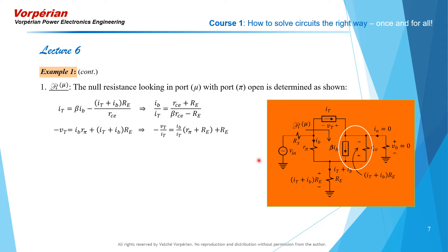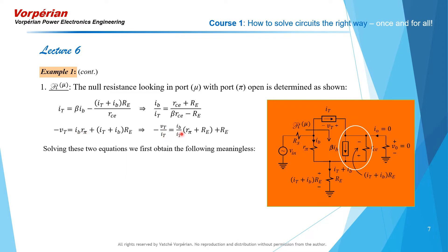At this junction, I_T equals beta·I_B plus the current through R_CE, which is (I_T + I_B)·R_E / R_CE. This gives us I_B / I_T. The second equation comes from nulling V_out: the voltage between the two points equals the sum of voltages across R_pi and R_E, which equals minus V_T. Solving gives V_T / I_T as (I_B / I_T)·(R_pi + R_E) + R_E.